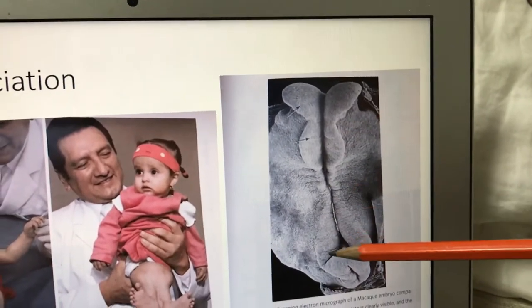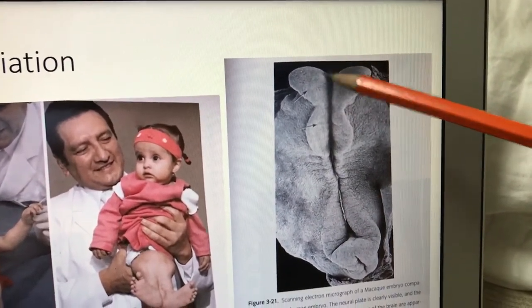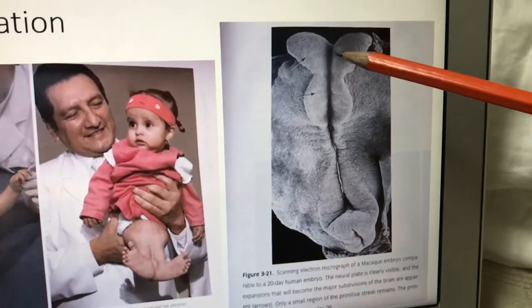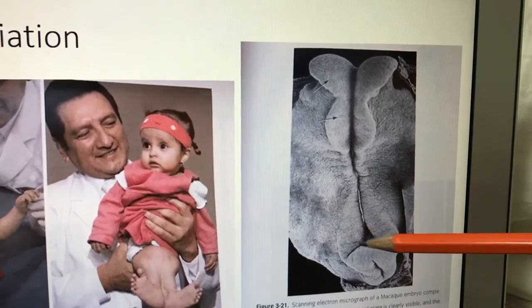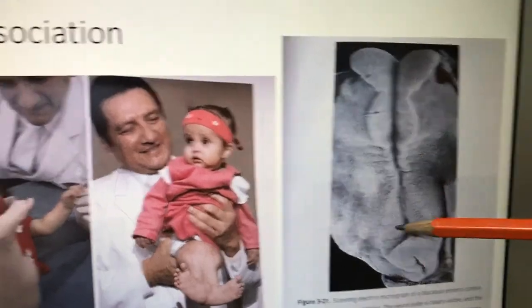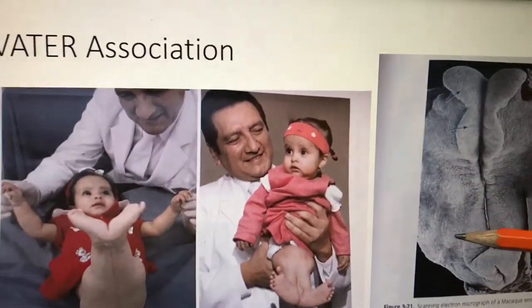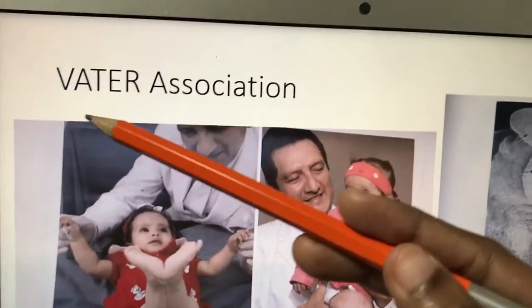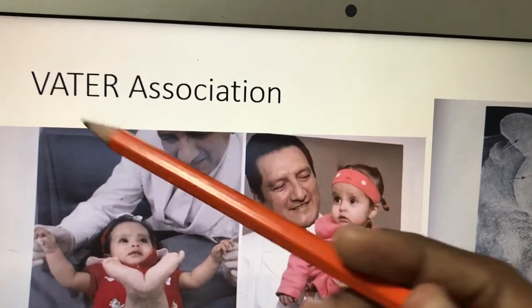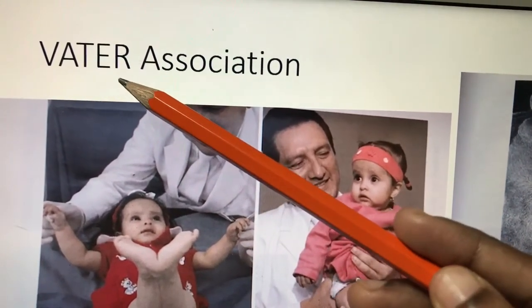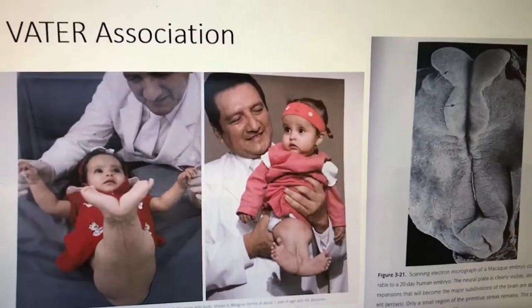The neural folds must fuse properly. If they don't fuse at the cranial end, the cranial cavity will not be closed — that is called anencephaly. If the caudal end is not closed, that leads to spinal cord abnormalities — spina bifida occulta. There is also the VATER association — all the anomalies present together: tracheoesophageal fistula, respiratory difficulty, imperforate anus — all associated with gastrulation defects.